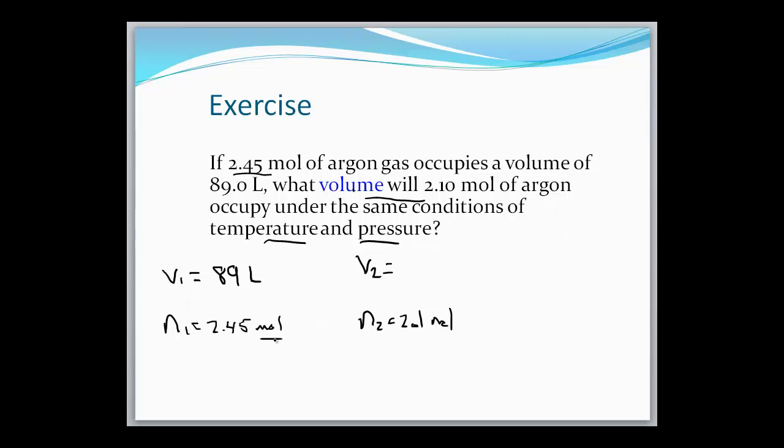But let's think about the problem before we solve it mathematically. If we're decreasing the number of moles, what's going to happen to the volume? Okay, get an idea in your head. Now let's solve it. So we've got 89 liters over 2.45 moles, V2 over 2.1 moles. Do the math and we get 76.3 liters.